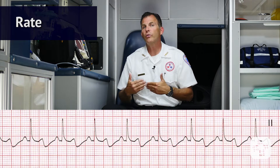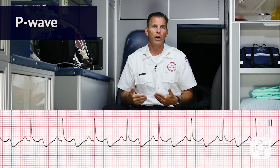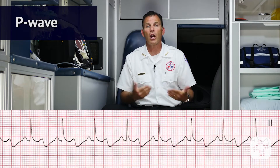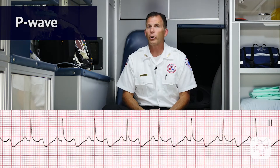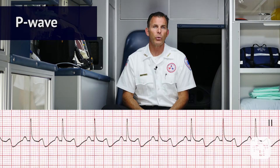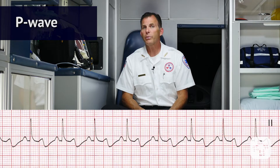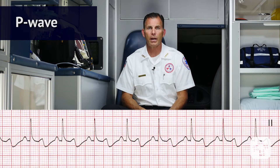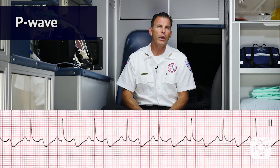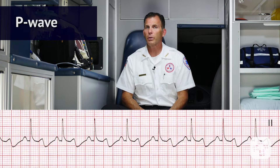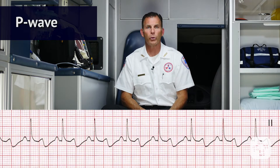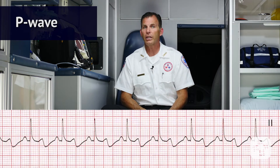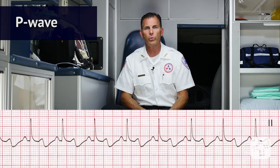Next we move on to evaluating the P wave. We ask ourselves: are the P waves present? We can clearly see in this ECG that the P waves are present. Do they occur regularly? We see that each of the P waves occurs regularly. Is there one P wave for each QRS complex? Yes, there is one P wave for each QRS complex. Are the P waves smooth, rounded, and upright? Yes, the P waves are smooth, rounded, and upright. And do all the P waves have similar shapes? Yes — each of them is uniform in shape, smooth and rounded.